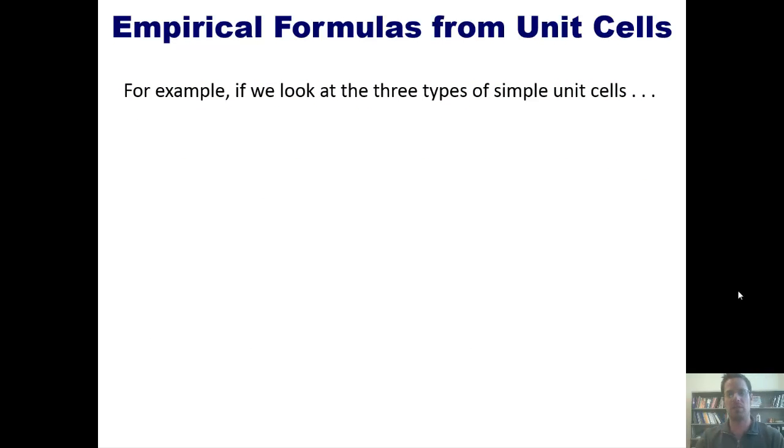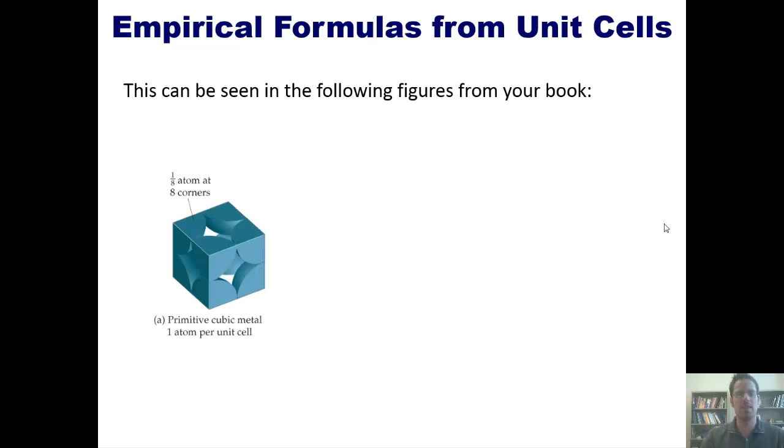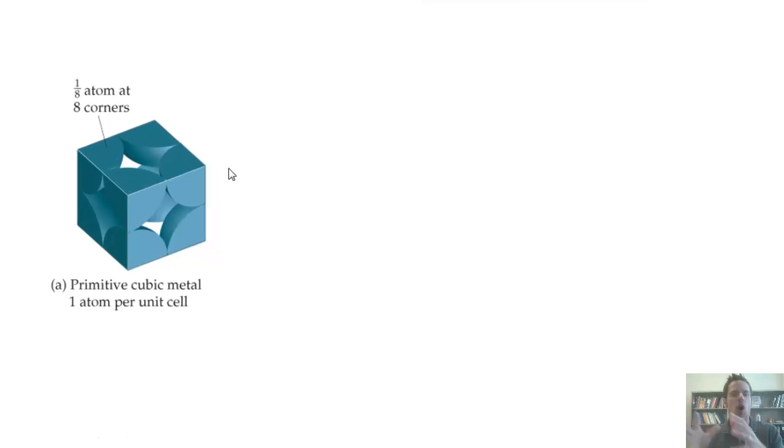For example, if we look at three different types of simple unit cells, we can see that some of the atoms at the vertices, along the edges, or straddling the faces of the cubes are not completely inside the cubes. This is shown a little bit more clearly in the following figures from our book. In this case, we've taken a primitive cubic unit cell and shaved off all of the sections of each sphere that are not inside the cube. You'll notice that because each sphere is at a vertex, a corner inside that box, only one-eighth of each sphere is actually inside the box. Therefore, you only use one-eighth of each one of those atoms when integrating it into your empirical formula.